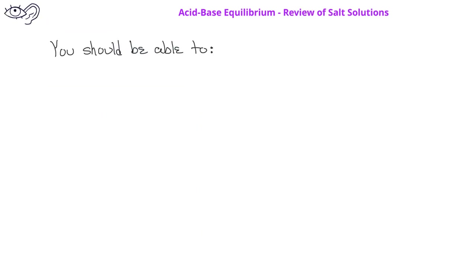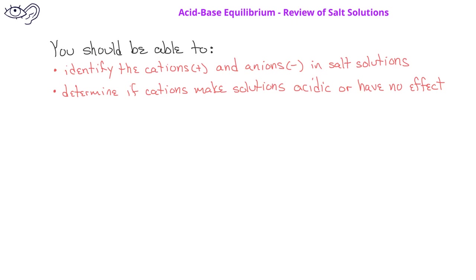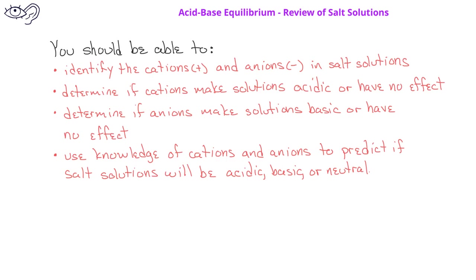By now, you should be able to identify the cations and anions in a salt solution. You should then be able to determine if the cations make solutions acidic or have no effect. You should also be able to determine if anions make solutions basic or have no effect. Finally, you should be able to use what you know about cations and anions to determine if a particular salt solution will be acidic, basic, or neutral.